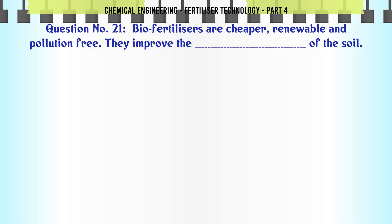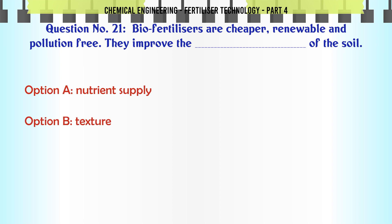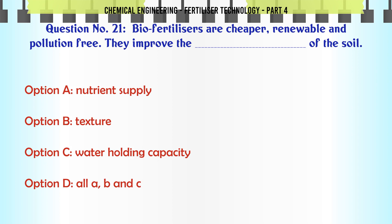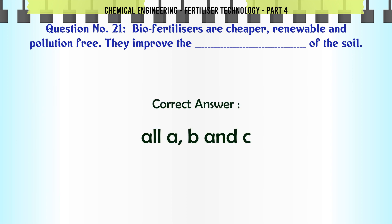Biofertilizers are cheaper, renewable and pollution free. They improve the __ of the soil: a. nutrient supply, b. texture, c. water holding capacity, d. all of A, B and C. The correct answer is: all of A, B and C.